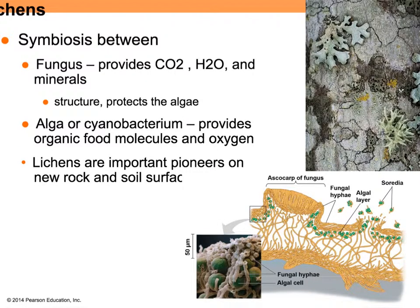Lichens are important because they can colonize new areas, help with decomposition, and are extremely common. They represent a symbiosis between a fungus — which provides carbon dioxide, water, and other minerals — and an algae that lives inside that fungus. Under a microscope you can literally see tiny algae cells wrapped up in the hyphae of the fungus. Those algae photosynthesize and share the sugars with the fungus.